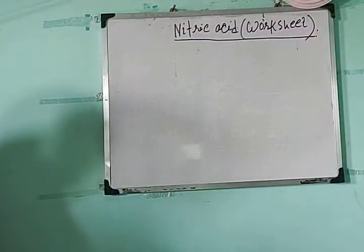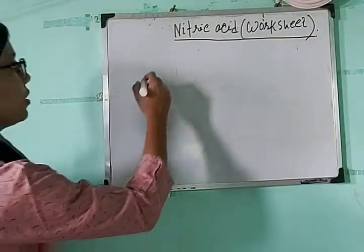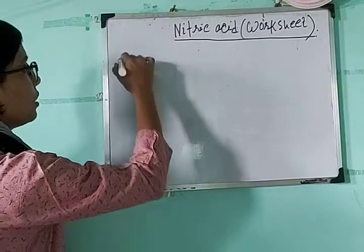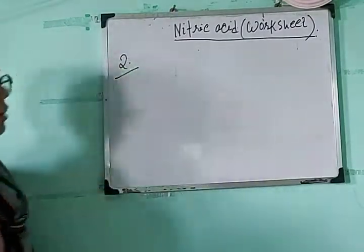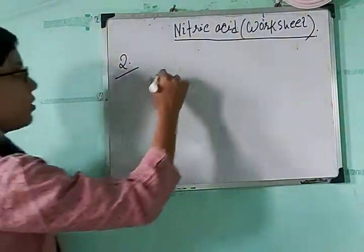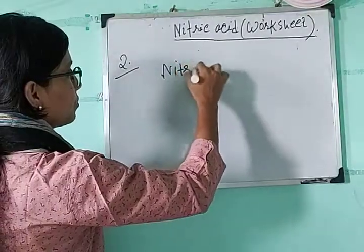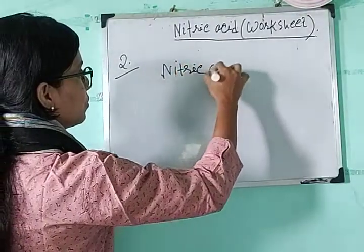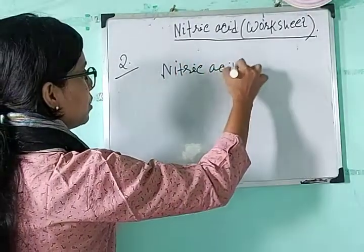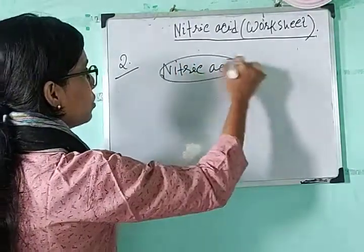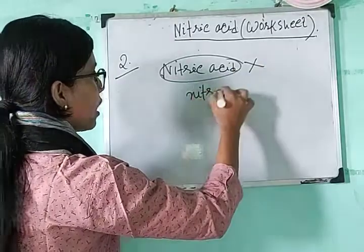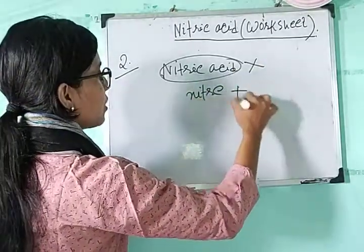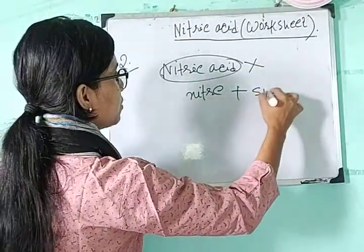In this question, in place of 'nitric acid' the word should be 'potassium nitrate.' So the corrected question will be: potassium nitrate and sulfuric acid are taken in a 1:1 ratio, though sulfuric acid is a dibasic acid.